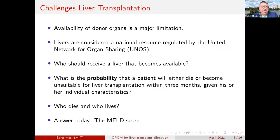Livers are considered a national resource regulated by the United Network of Organ Sharing, UNOS. The key question is: who should receive a liver that becomes available? The nation has decided to give it to the people with the highest need. Assuming blood compatibility, the question becomes: what is the probability that a patient will either die or become unsuitable for liver transplantation within three months, given their individual characteristics? These are very serious questions involving issues of life and death.